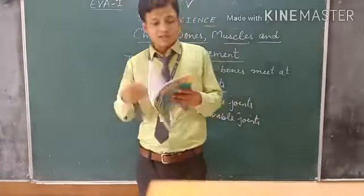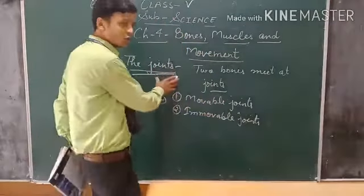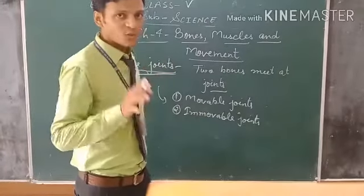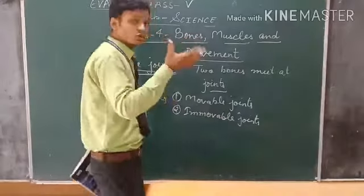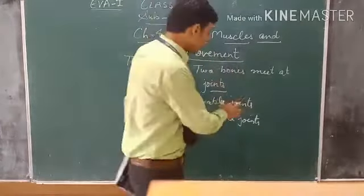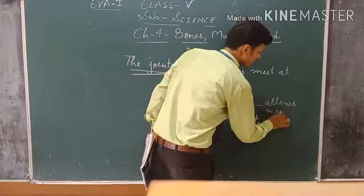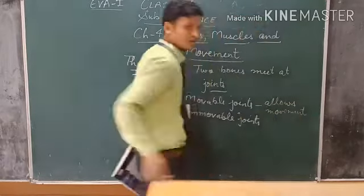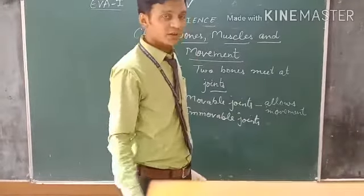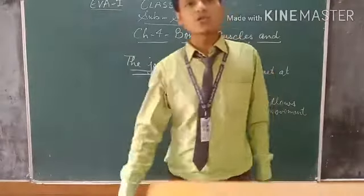Now we will study about the types of movable joints. To recap: a joint is the place where two bones meet. There are two kinds of joints — movable joints, which allow movement, and immovable joints, which do not allow movement.